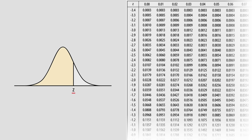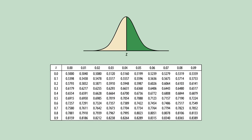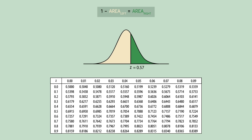We can also use the standard normal table to determine the area to the right of any z-value. All we have to do is take 1 minus the area that corresponds to that z-value. For example, to determine the area to the right of a z-score of 0.57, we find the area corresponding to this z-value and subtract it from 1. According to the table, the z-score of 0.57 has an area of 0.7157 to the left of it, so 1 minus 0.7157 gives us an area of 0.2843.